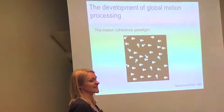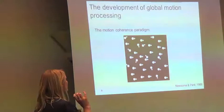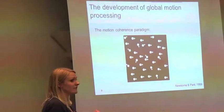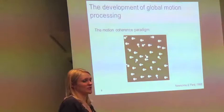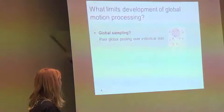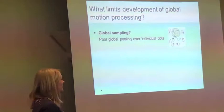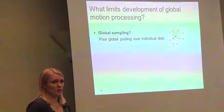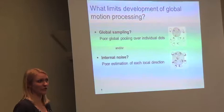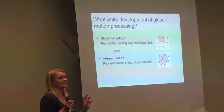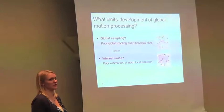So how is global motion processing normally assessed? This is the standard motion coherence paradigm. There are randomly placed dots on the screen; a proportion of them move in a coherent direction — all going either to the left or right — and then the remainder are going in random directions. We're trying to find the smallest proportion of clearly moving dots required for accurate discrimination.